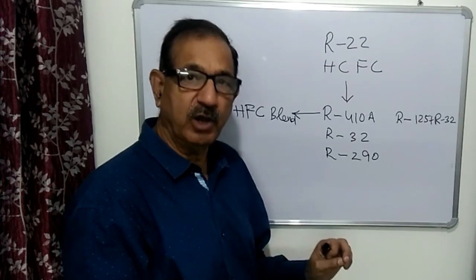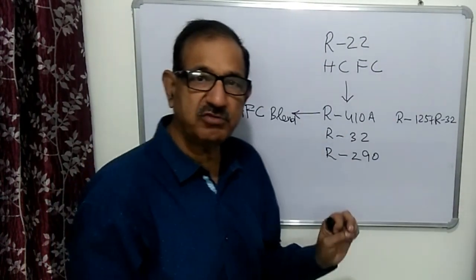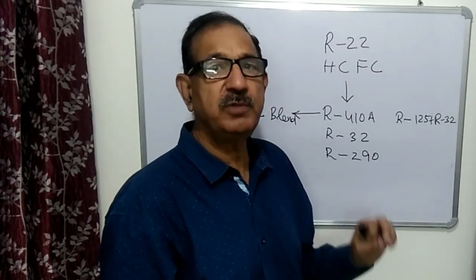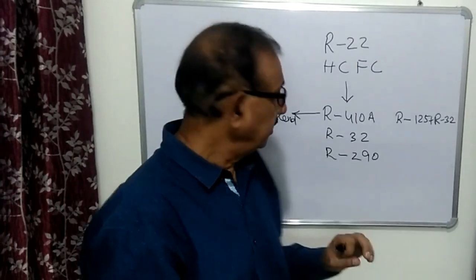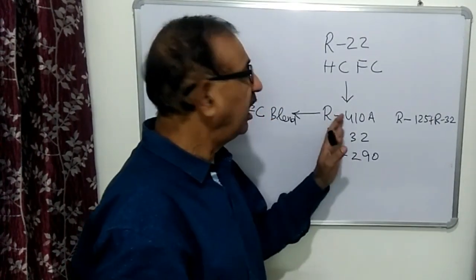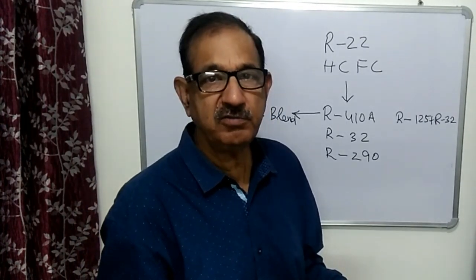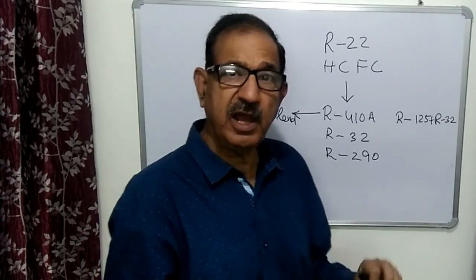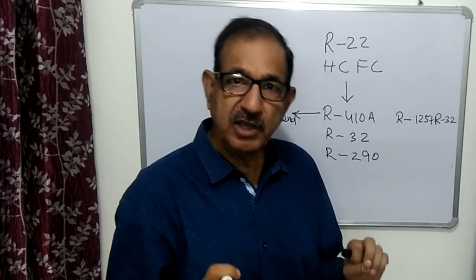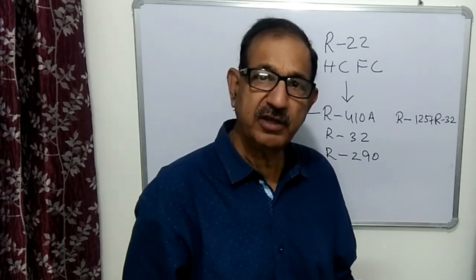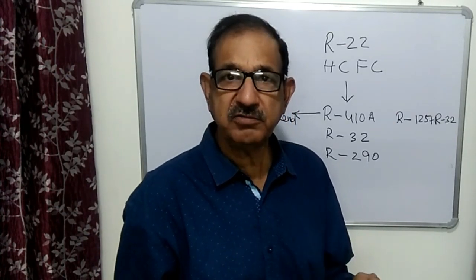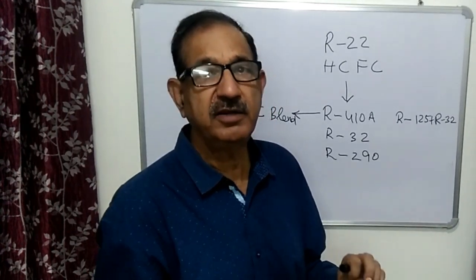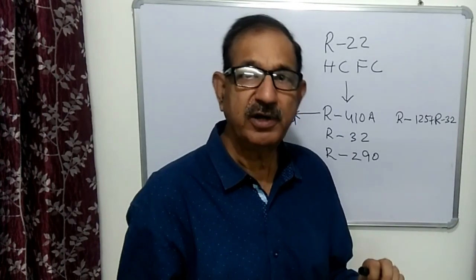R125 and R32 both have different boiling temperatures, so whenever you charge this refrigerant, please charge it in the liquid state — keep the cylinder upside down. R410A is a very high-pressure refrigerant, and you must use only the recommended gauge manifold, which has a low-side gauge of 500 psig and a high-side gauge of 800 psig, meant for R410A.